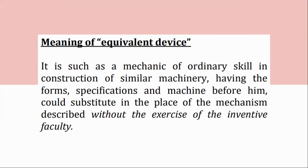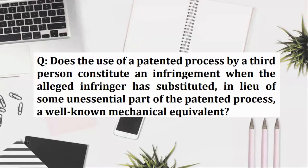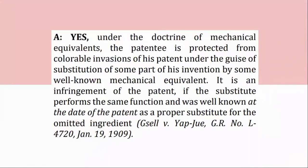Does the use of a patented process by a third person constitute an infringement when the alleged infringer has substituted, in lieu of some unessential part of the patented process, a well-known mechanical equivalent? Yes, under the Doctrine of Mechanical Equivalence, the patentee is protected from colorable invasions of his patent under the guise of substitution of some part of his invention by some well-known mechanical equivalent. It is an infringement of the patent if the substitute performs the same function and was well-known at the date of the patent as a proper substitute for the omitted ingredient. Xyl v. Yepjew, GR No. L-4720, January 19, 1909.